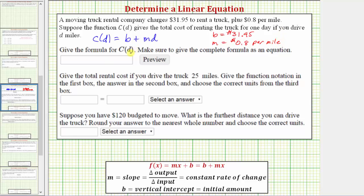Which means the total cost function is C(D) = 31.95 + 0.8D.